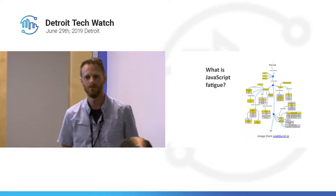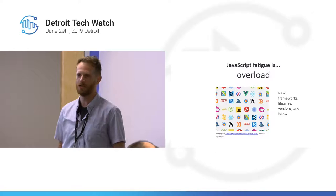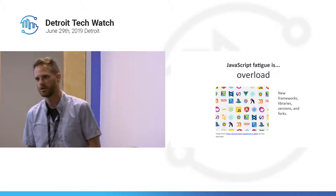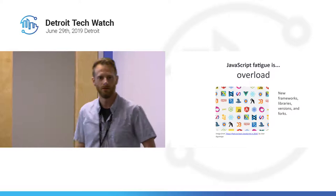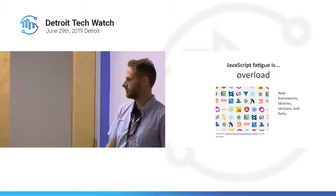I describe that as overload of all these different decisions, micro-decisions we have to make. New frameworks, new libraries, the versions, the forks of those. I used Node.js for a while, and at one point it was forked into IO.js. So it was very overwhelming for me.